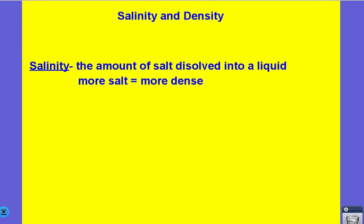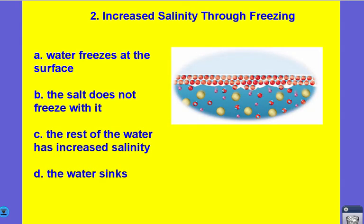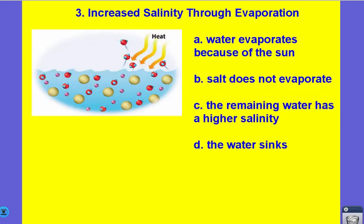There are two key situations where salinity becomes a major factor. When water freezes, the salt remains behind, increasing salinity and causing that denser water to sink. Evaporation works the same way — when water evaporates, the salt remains behind, increasing density. So the two places where this has the greatest effect are near the equator due to higher evaporation, and near the poles due to more freezing.